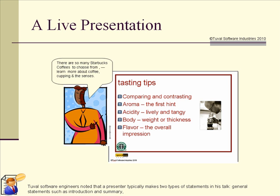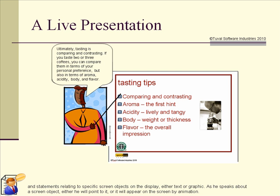Two Vels software engineers noted that a presenter typically makes two types of statements in his talk: general statements such as introduction and summary, and statements relating to specific screen objects on a display, either text or graphic. As he speaks about a screen object, either he will point to it, or it will appear on the screen by animation.